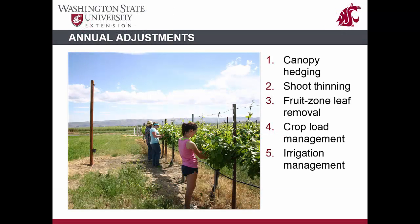The top five annual adjustments in canopy management include canopy hedging, shoot thinning, fruit zone leaf removal and summer lateral shoot removal, shoot positioning, crop load management, and irrigation management. In Washington, crop load management is not commonly considered a canopy management technique, even though it affects canopy development when done at specific times.